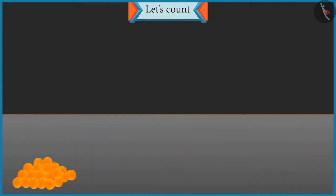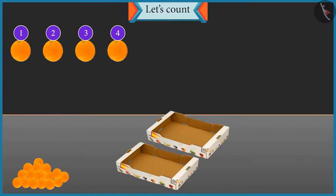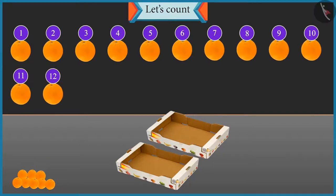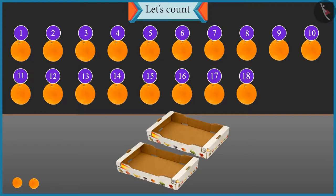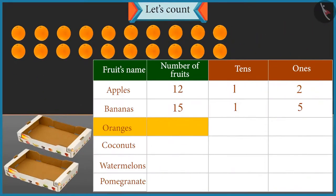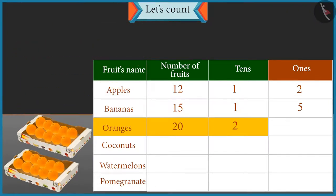Now let's count these oranges and place them in the box. One, two, three, four, five, six, seven, eight, nine, ten, eleven, twelve, thirteen, fourteen, fifteen, sixteen, seventeen, eighteen, nineteen and twenty. There are twenty oranges. Well done. Now tell me, how many tens are there in twenty? With twenty oranges, two groups of ten oranges will be formed, so there are two tens. And how many ones are there in twenty? There are no oranges left, so the number of ones is zero. Well done, Chotu.